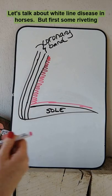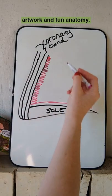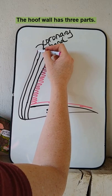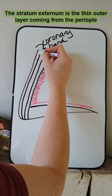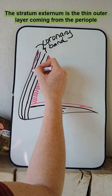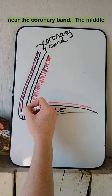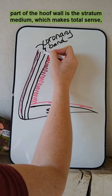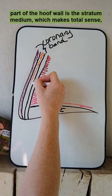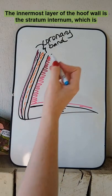Let's talk about white line disease in horses, but first, some riveting artwork and fun anatomy. The hoof wall has three parts. The stratum externum is the thin outer layer coming from the periople near the coronary band. The middle part of the hoof is the stratum medium, which makes total sense, and that comes from the coronary band.